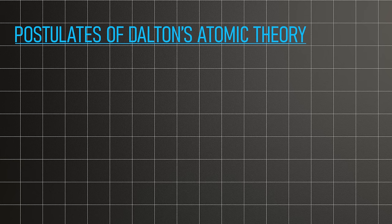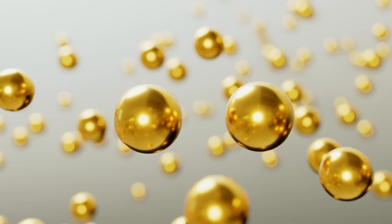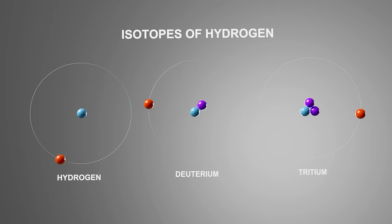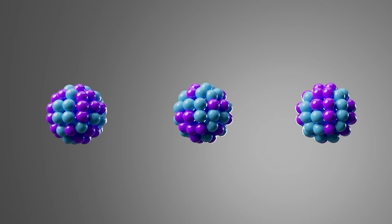Dalton defined his theory with a number of postulates that explain the physical and chemical behavior of an atom. Dalton stated that all atoms of a particular element are similar in all respects, whether their physical or chemical properties. Later this was proven wrong because of the existence of isotopes. Isotopes are atoms of the same element but with different masses due to the unequal number of neutrons. However, the concept of electrons and nucleus were unknown at that time. Dalton also stated that atoms of different elements are different in all physical and chemical properties.